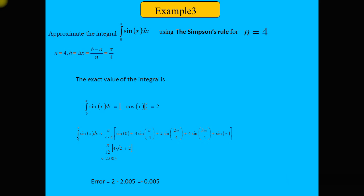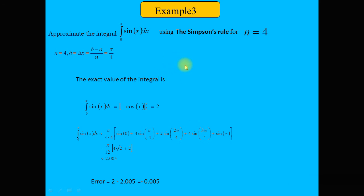If we increase the number of steps in Simpson's rule, we obtain an approximate result closer to the exact answer. Comparing the errors in the trapezoid rule versus Simpson's rule for this problem, the error using Simpson's rule is much smaller. Simpson's rule is better than the trapezoid rule.